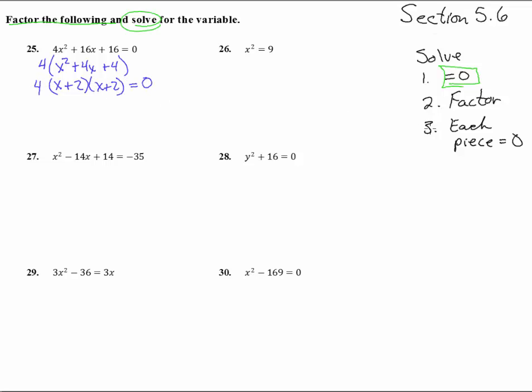There we now have it factored. Look at step number three, each piece or each factor equal to zero. 4 equals zero, well that's foolish, we're not even gonna write that guy down. x plus 2 equals zero, that gives us x equals negative 2. And x plus 2 equals zero, that gives us x equals negative 2 again. There's number 25, it just has one answer negative 2 but it happened twice.